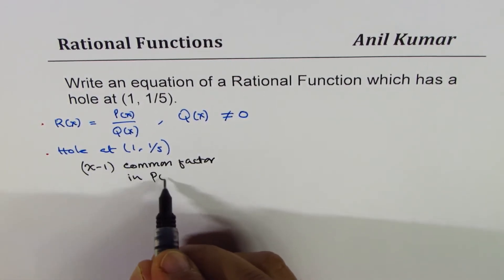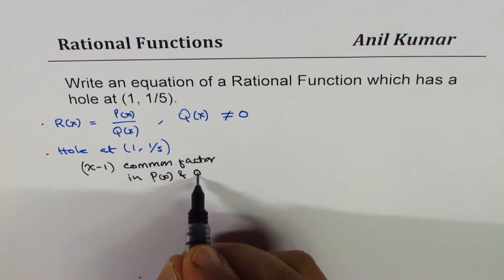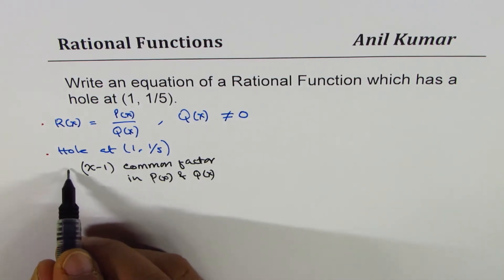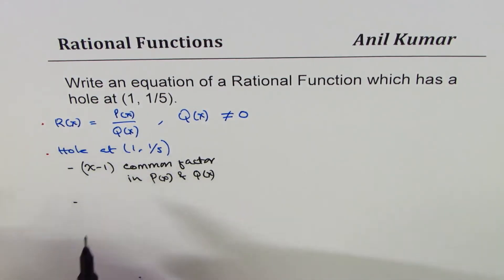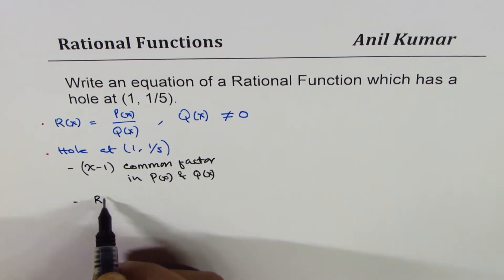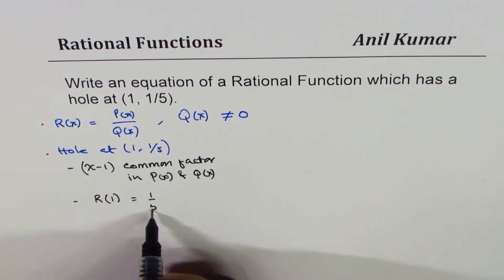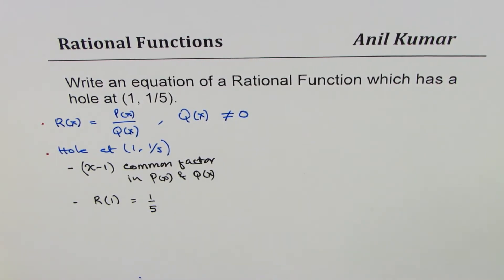Once that factor cancels out, it leads to a hole. That is the first thing we understand. And the second thing is that the value of function R(x) at 1 should be equal to 1/5. These are very important things to take care of when you are writing equations for such conditions.